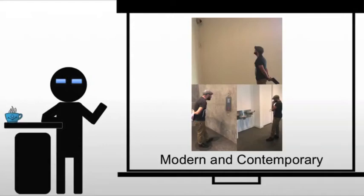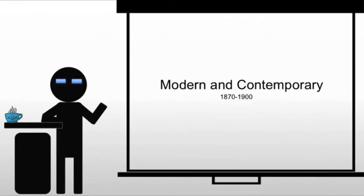We move on to modern and contemporary art, and this is usually where we start to think of art getting a little odd. But it's not — it's really about learning to look at it, learning how to interpret it like any other form of art. We're starting with 1870 to 1900, and we're going to be dealing with multiple movements at once, a trend that will accelerate as we move through the next three sections.